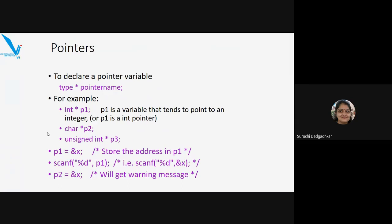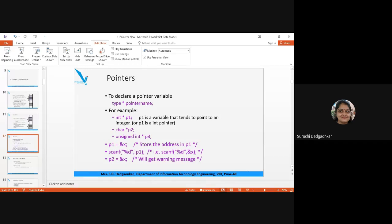Here in this example, pointers are declared. P1 is an integer pointer and P2 is a character pointer. There is also another pointer P3 which is unsigned int. How much memory is required for storing P1, P2, and P3, which have different data types? Can you comment — is it the same memory or different memory required for storing all of them?